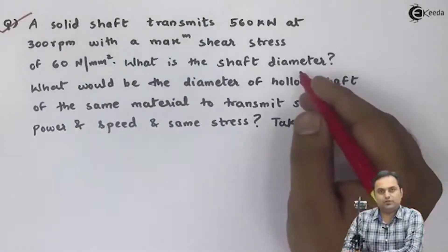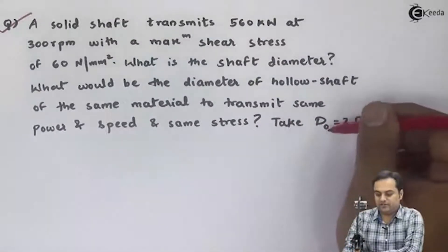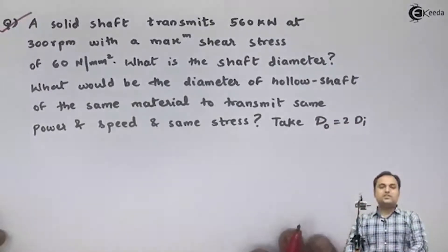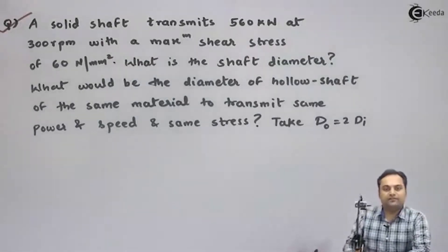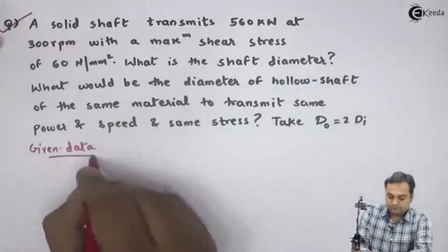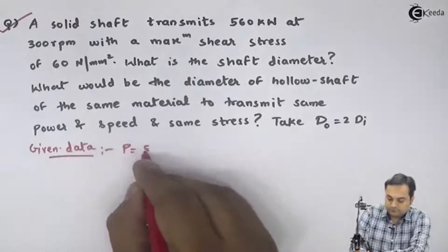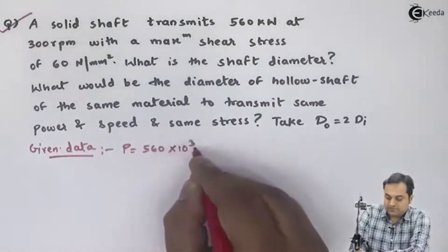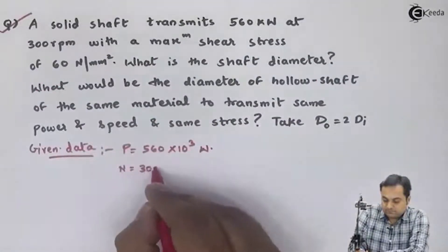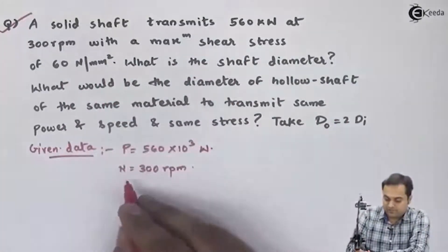In the first case it is a solid shaft; in the second case it is a hollow shaft. The relation given is: outer diameter D_o equals twice the inner diameter D_i. Now let me write the data. The solid shaft transmits 560 kilowatts — that is 560 × 10³ watts — at 300 RPM. The maximum shear stress f_s is 60 newton per mm square.